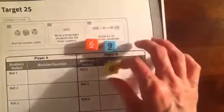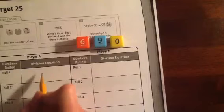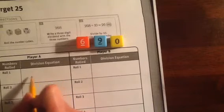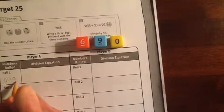You will roll them to play the game and then you will make a three-digit dividend. Let's see, I got a zero. Okay, so once I rolled that, say I'm Player A and I'm going to write my dividend. The numbers rolled were 6, 9, 0.